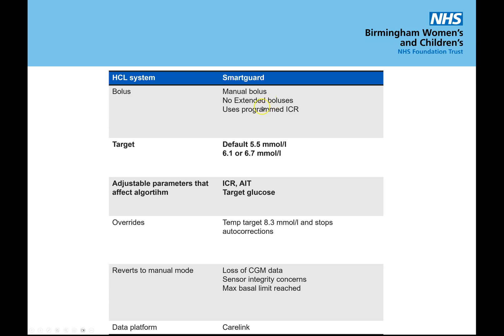From a bolus perspective, there are no extended boluses, and making sure your carb ratios match what the person needs is important. The tighter you set the target at 5.5, the more time in range you'll get, but you have to balance that against individuals with varying insulin sensitivities across the day. Because you don't have time blocks, you might have to compromise at 6.1; however, if someone has very similar insulin sensitivity across the day, 5.5 is ideal. The active insulin time is the big one — if you shorten it you'll get a more aggressive algorithm and more time in range, but the risk is more insulin on board, which especially for people with sporadic activity may mean more hypoglycemia. You're always treading a balance between time in range and preventing excessive hypoglycemia.